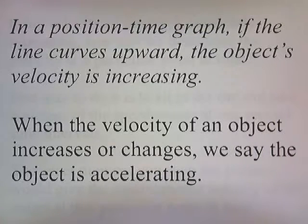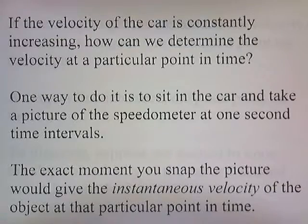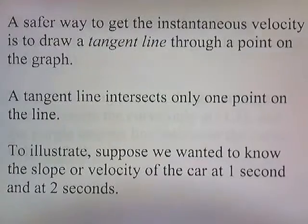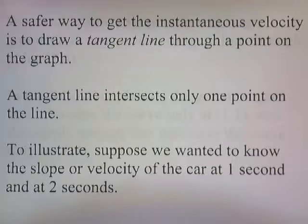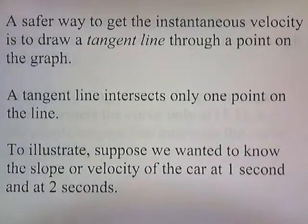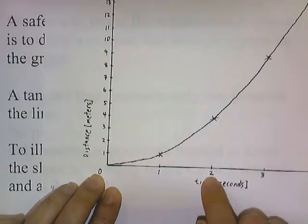When the velocity of an object increases or changes, we say the object is accelerating. If the velocity is constantly increasing, how can we determine the velocity at a particular point in time? One way is to sit in the car and take a picture of the speedometer at 1-second intervals. The exact moment you snap the picture gives the instantaneous velocity at that point in time. A safer way is to draw a tangent line through a point on the graph. A tangent line intersects only one point on the curve. Suppose we want to know the velocity at 1 second and at 2 seconds.